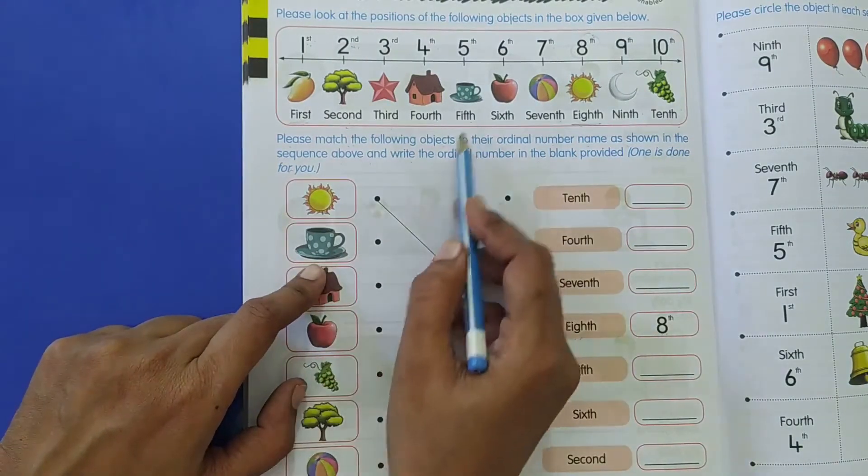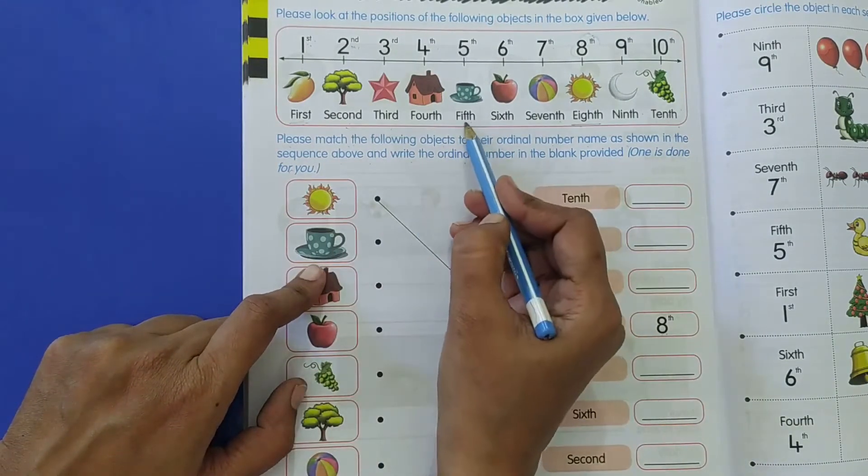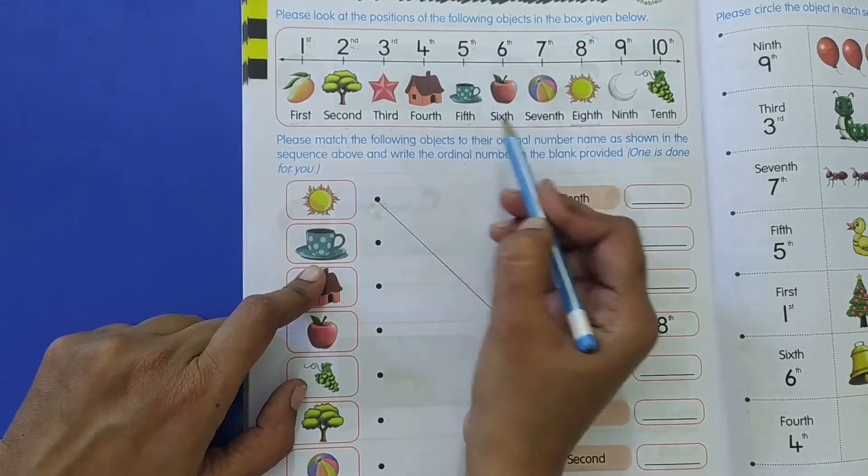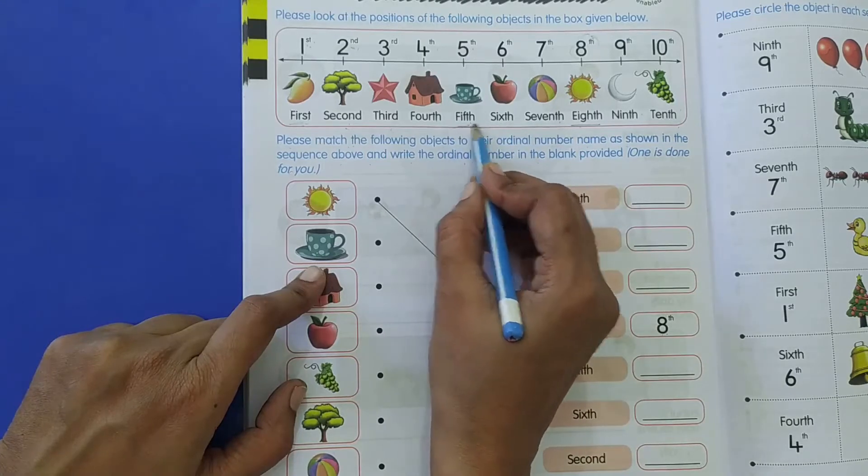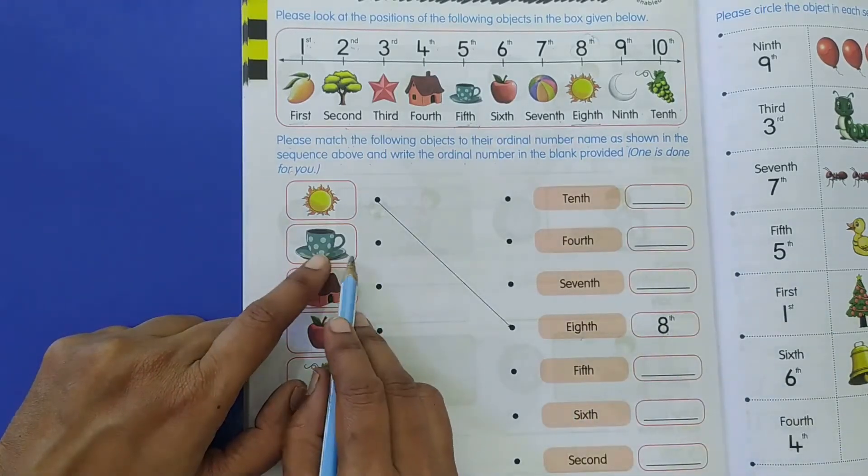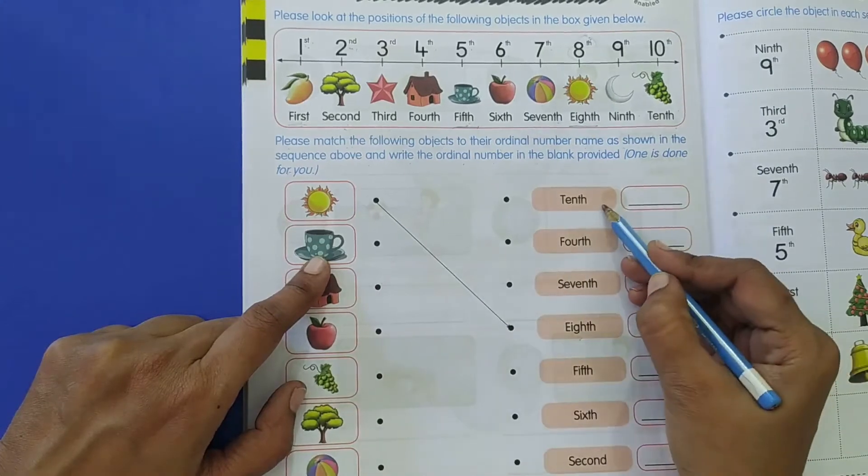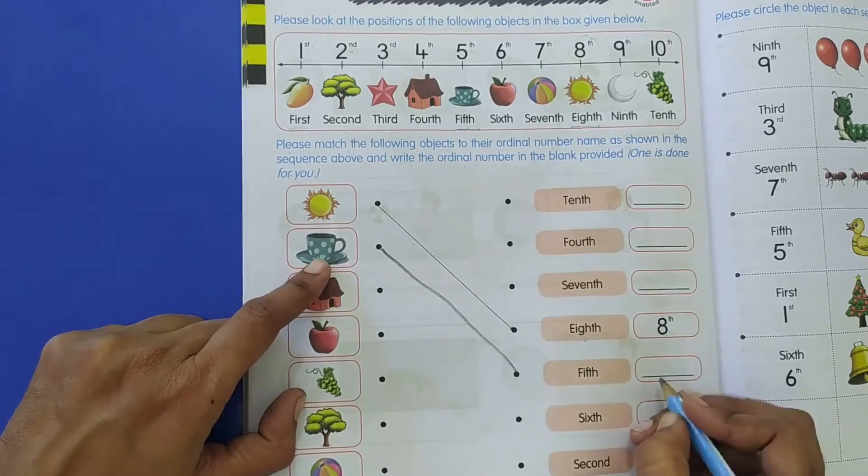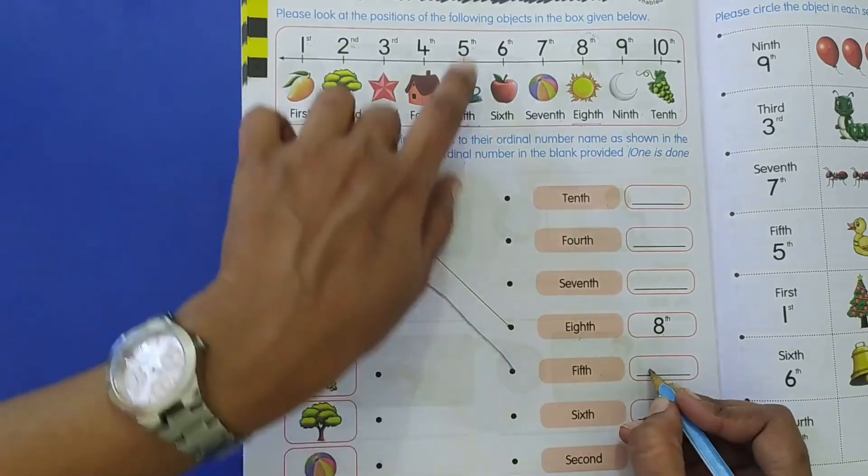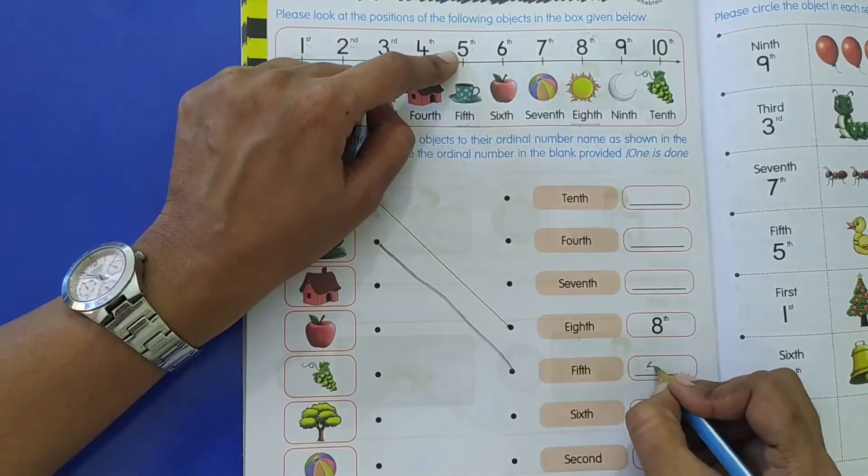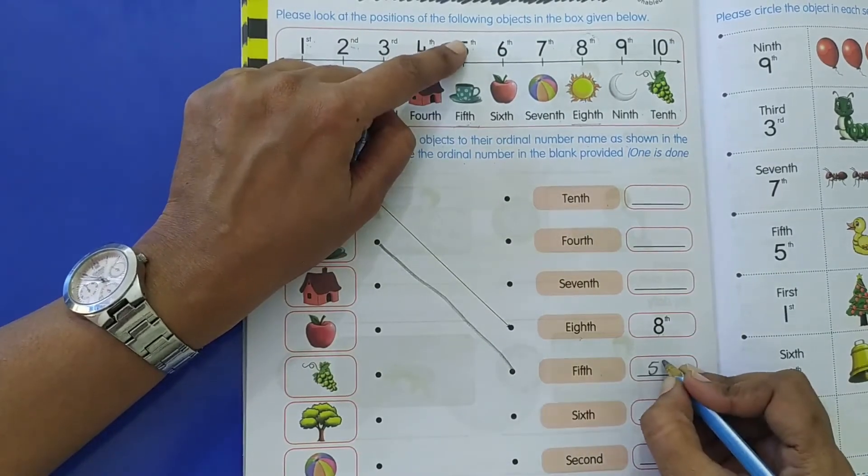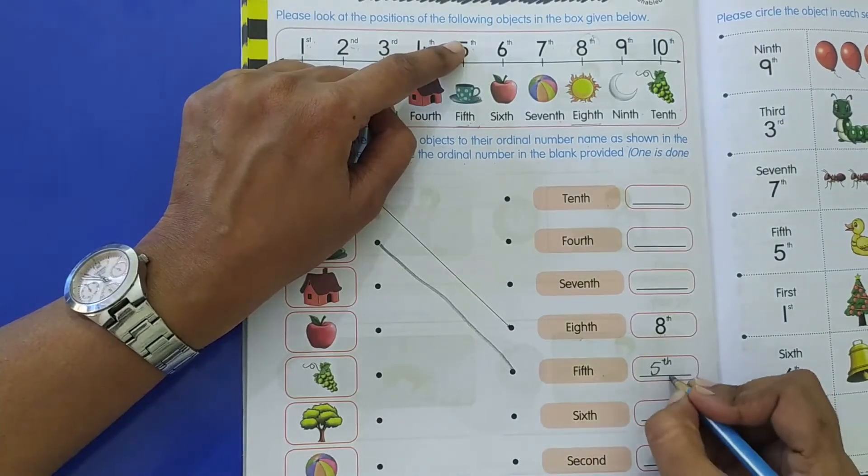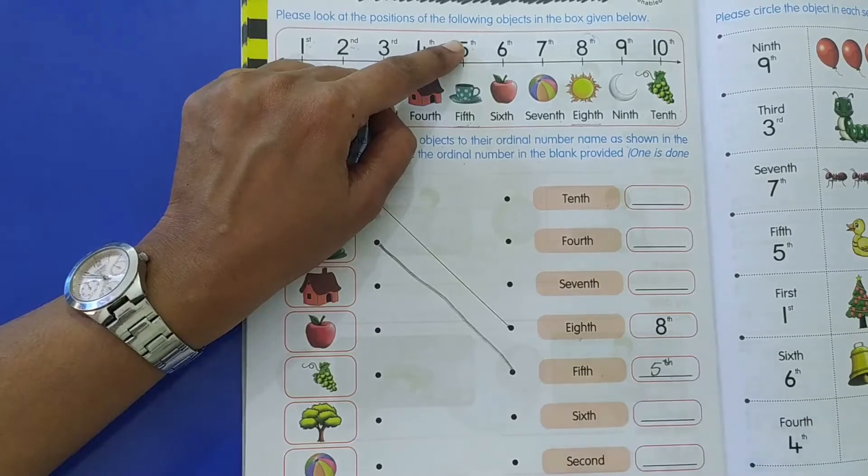Now the cup and saucer. Cup and saucer is at what position? Here, right? So it is at the fifth position. And what is the spelling of fifth? Here. F-I-F-T-H. So where do you see F-I-F-T-H? This is F-I-F-T-H. So you will match it here and you will write the number. Five and on top small T-H. This is how you will write it. Not big T-H, small on top.